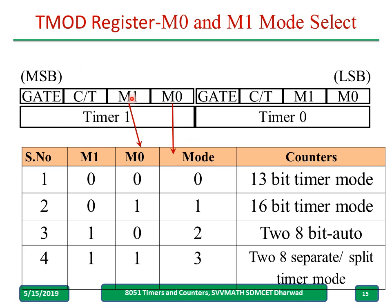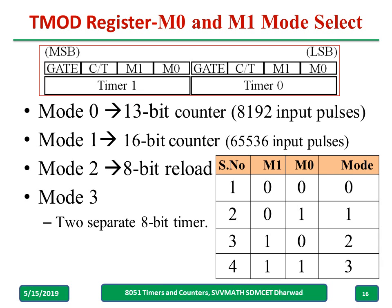The mode bits M1 and M0 determine which mode the timer operates in. M1=0, M0=0 selects Mode 0 (13-bit timer); M1=0, M0=1 selects Mode 1 (16-bit timer); M1=1, M0=0 selects Mode 2 (8-bit auto-reload mode); and M1=1, M0=1 selects Mode 3 (two separate 8-bit timers). In Mode 0, the 13-bit counter allows up to 8192 input pulses. In Mode 1, the 16-bit counter allows up to 65536 input pulses (0000 to FFFF). Mode 2 provides 8-bit auto-reload (00 to FF), and Mode 3 provides two separate 8-bit timers.